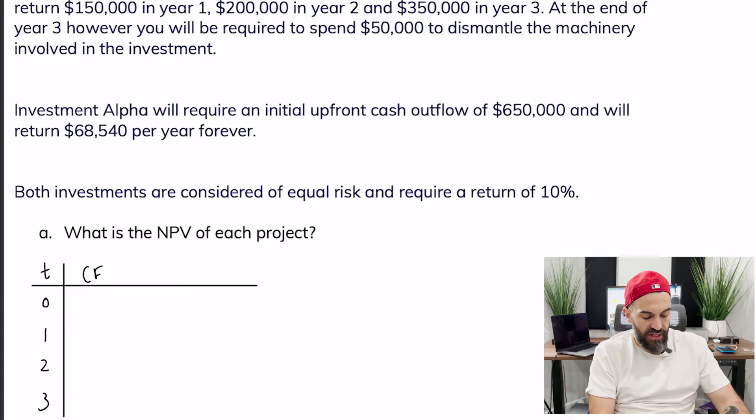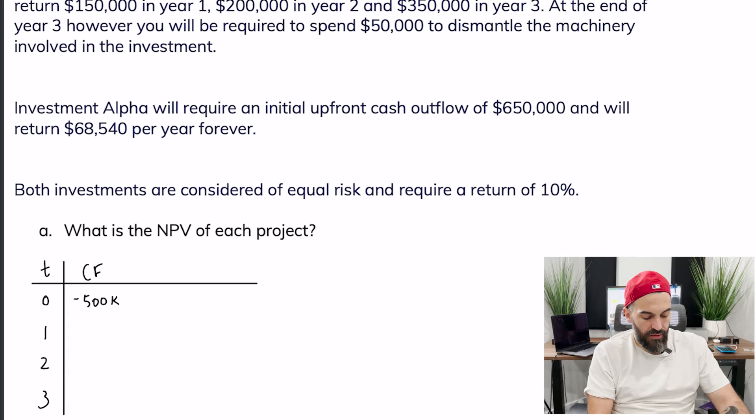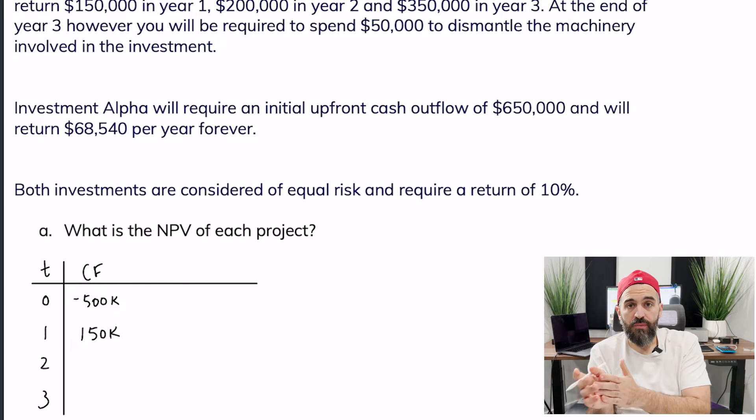The cash flows are negative $500,000, then we're going to gain $150,000, gain $200,000, and in year three because we've got an inflow of $350,000 but we also have an outflow of $50,000 the net cash flow would be positive $300,000.